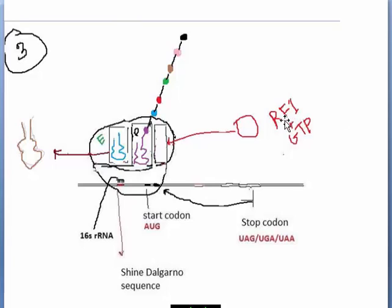Now here is release factor 1. The release factor will come and bind to the A site, that is the A site of the ribosomal subunit. Release factor 1 is a GTPase protein because it needs the energy of GTP to maintain this process. So the RF1 will bind to this portion, the A site, and bind with the stop codon.